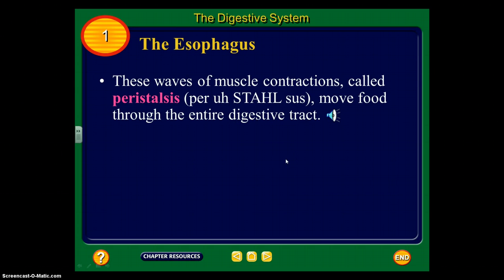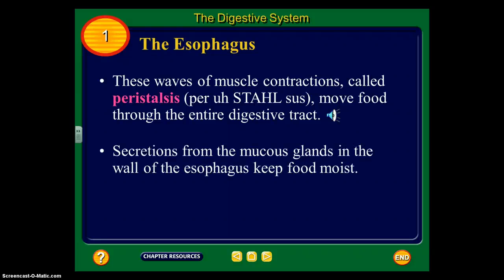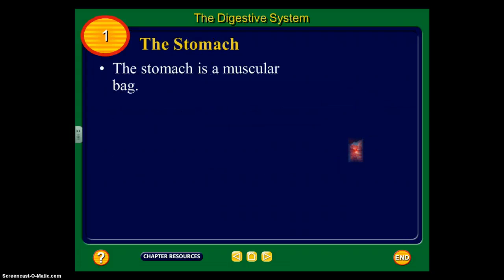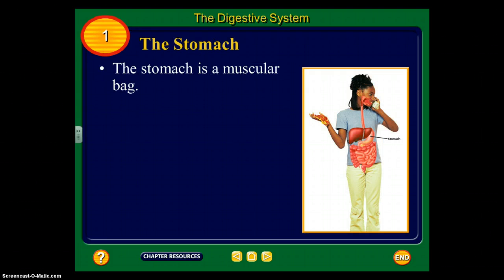The waves of muscle contractions are called peristalsis, and they move food through the entire digestive tract. Peristalsis happens in our esophagus, small intestines, rectum — all the way to where we expel it out of our anus. Secretions from the mucus glands in the wall of the esophagus keep the food moist, and then the food is dumped into the stomach.